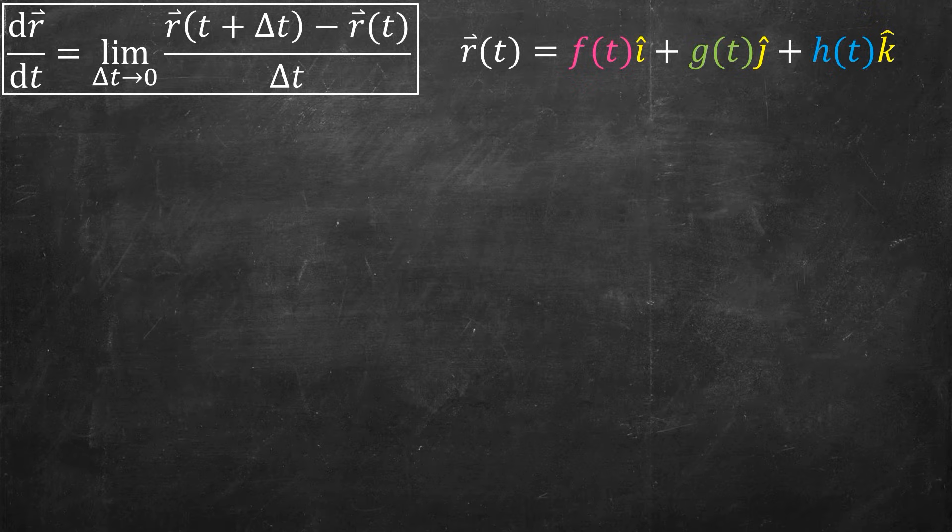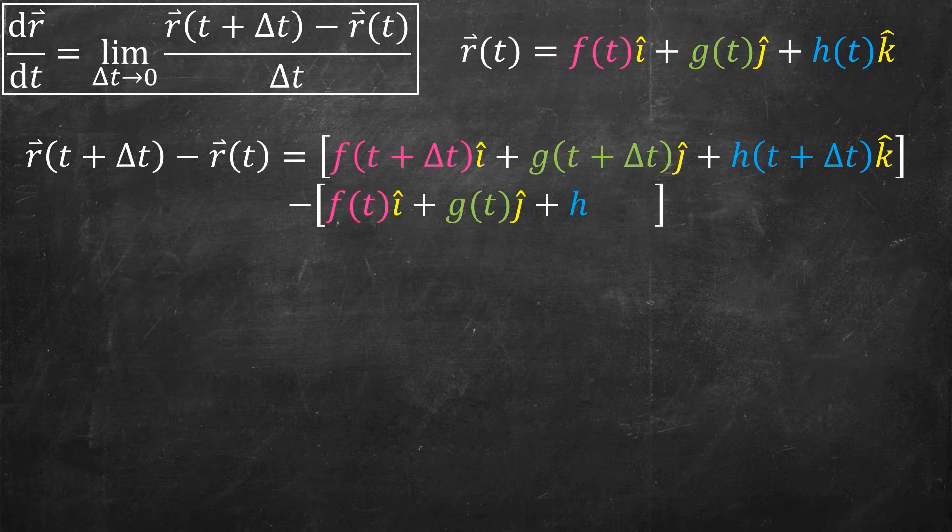My r vector has these three different components, and I sort of want to split it up into the i-hat, the j-hat, and the k-hat components. So the way I'm going to do that is first just look at the numerator, the difference quotient, the r of t plus delta t minus the r of t.